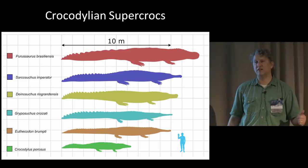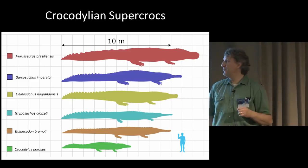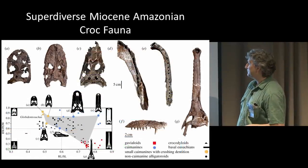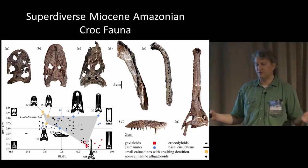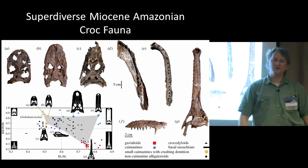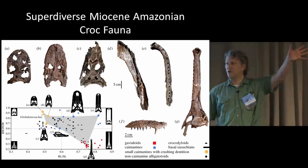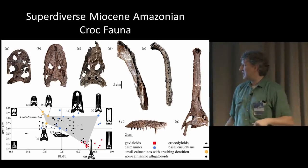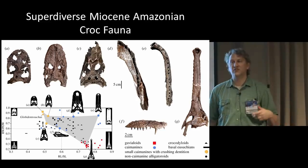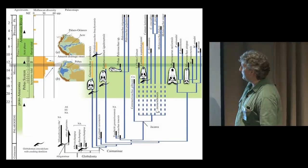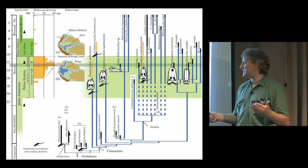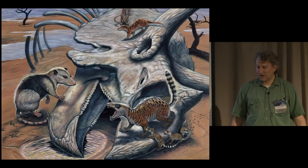Purussaurus is a relative of the caimans and - I hate to say this as a tyrannosaur worker - probably had the strongest bite of any carnivorous animal ever. We would also have environments with tremendous numbers and diversity of crocodilians living side by side: baleen crocs that were suspension feeders gulping small fish, snub-nose crocodilians, gavialoid forms, all living together in the Miocene Amazon around 15 million years ago. So the Cenozoic features a remarkable radiation of crocodilians - it's truly not simply an age of mammals.